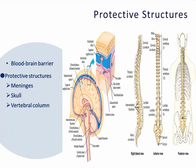The meninges are three layers of protective membranes surrounding the brain and the spinal cord. The dura mater is the thick, outermost layer. The pia mater is the innermost layer. The arachnoid is the membrane below the dura, and the subarachnoid space is just below the arachnoid, before the pia.